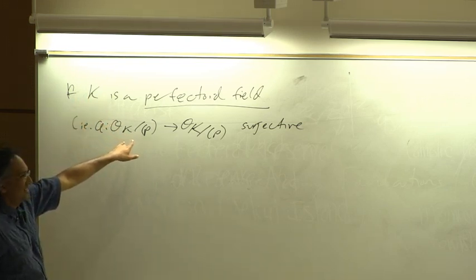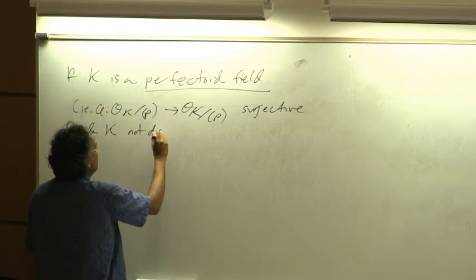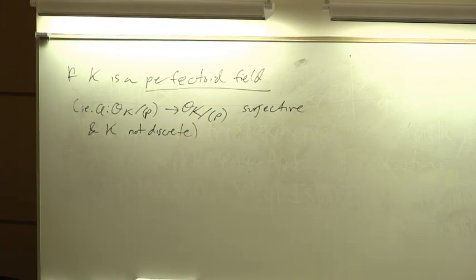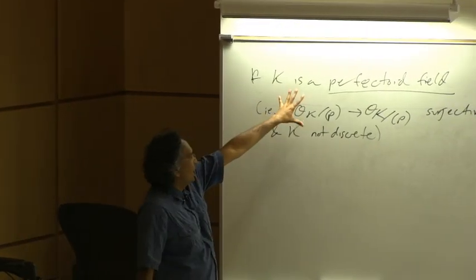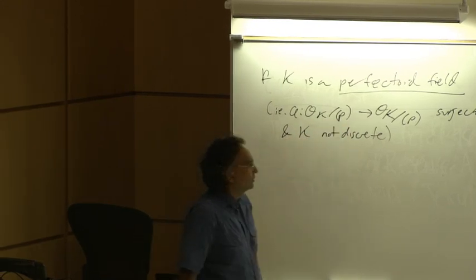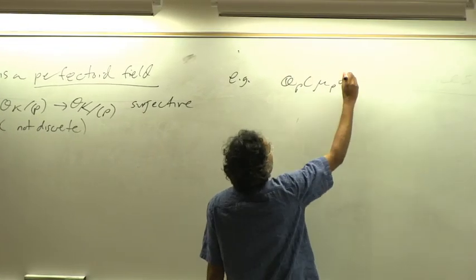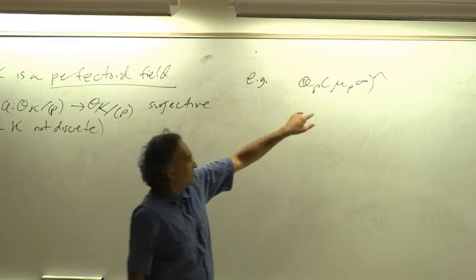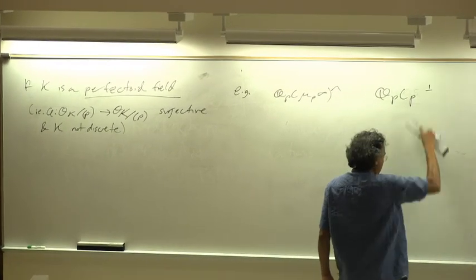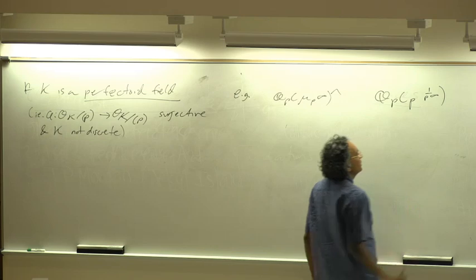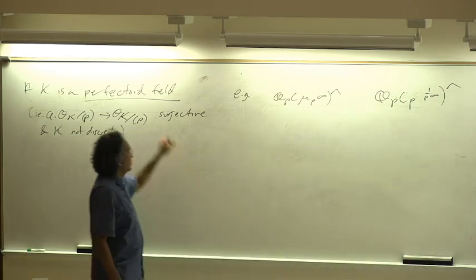This already holds if K is Q_p, but that's not somehow big enough. So I need some extra condition — for instance, assuming K is not discrete would be sufficient, or probably not absolutely unramified. If K is one of these sufficiently big fields, for instance if I take Q_p adjoined all the p-power roots of unity and take the completion, that's the most classical example. You could also take the Kummer-type example: Q_p adjoined all p-power roots of p, and complete that.